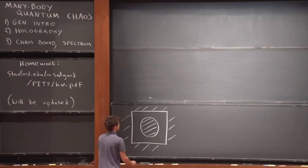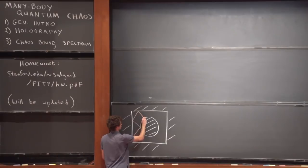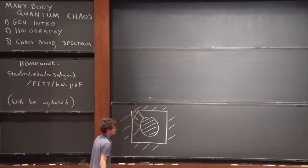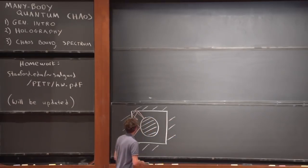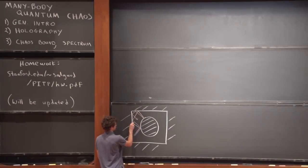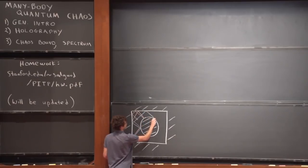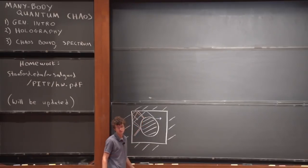The particle is moving around here — just a classical particle — and whenever it hits a wall, it reflects off it. An example of a trajectory would be one like this. If we consider a nearby trajectory that starts out with almost the same initial conditions and we follow it, it will look very similar for a while, but the differences will amplify over time. After just a few collisions, the two trajectories will end up in completely different places.